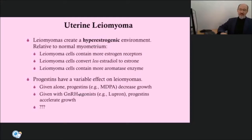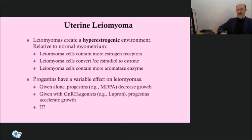As with estrogen, leiomyomas have a higher progesterone receptor density compared with their surrounding myometrium. Progesterone is considered the critical mitogen for uterine leiomyoma growth and development. Estrogen functions to upregulate and maintain progesterone receptors. Thus, cell proliferation, extracellular matrix accumulation, and cell hypertrophy — which all lead to leiomyoma growth — are controlled by progesterone directly and in a permissive role by estrogen. This relationship is supported by evidence that the anti-progesterone agents mifepristone and ulipristal acetate induce atrophy in most leiomyomas.